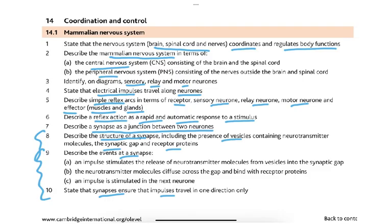To summarize the syllabus for 14.1: describe the structure of a synapse including vesicles containing neurotransmitter molecules, the synaptic gap, and receptor proteins; describe the events — impulse stimulates neurotransmitter release from vesicles into the synaptic gap, neurotransmitter diffuses across and binds to receptor proteins, and an impulse is stimulated in the next neuron; and state that synapses ensure impulses travel in one direction. This completes section 14.1. Thank you for subscribing.